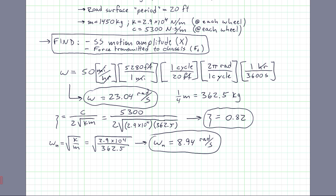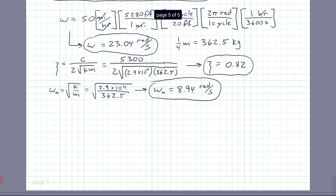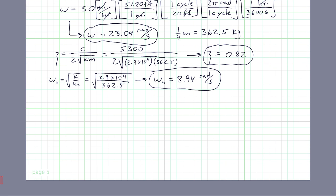The next thing we need is that r, the frequency ratio. I'm running on a page here. So r is omega over omega n. So that's going to be 23.04 divided by 8.94. So we have r is equal to 2.58. And by the way, that value of r tells you basically how far away from the natural frequency you're driving this thing. So at r of 1, it means we're driving it at resonance, basically, at the natural frequency. So we're somewhat away from that right now.